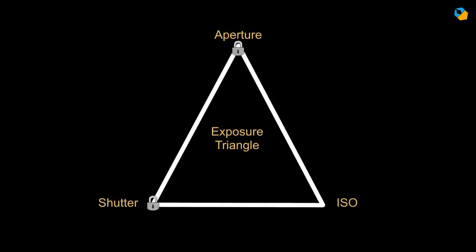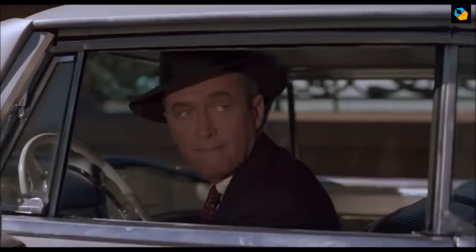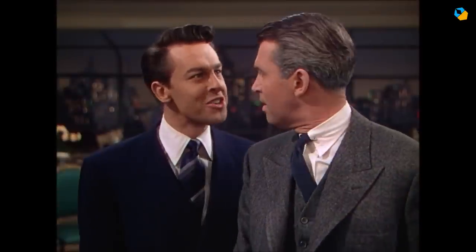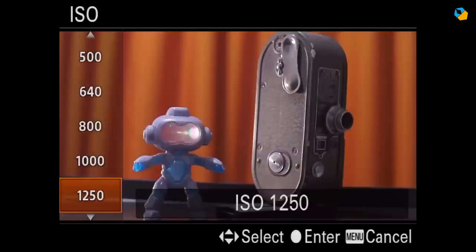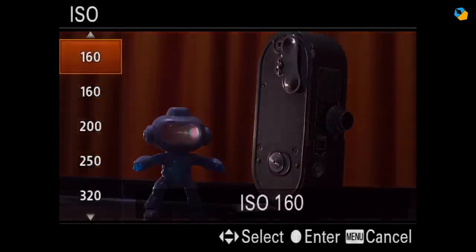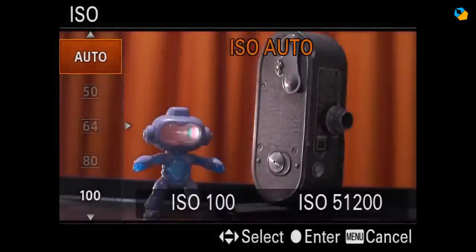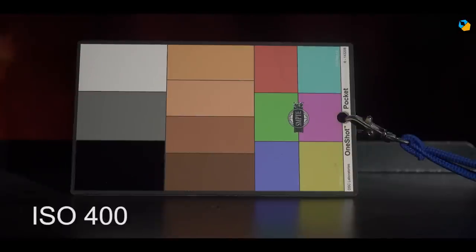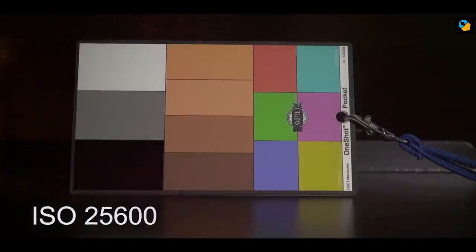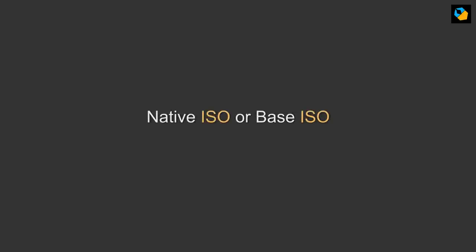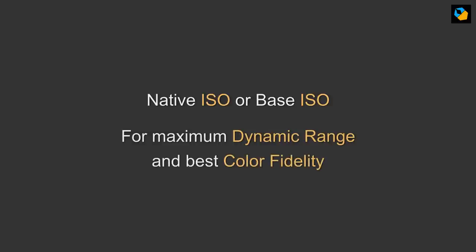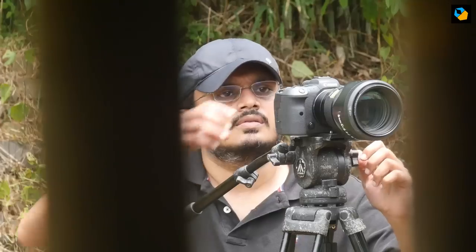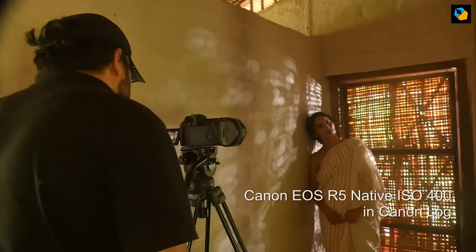Number 3: the ISO. In the exposure triangle, the ISO is the third cog. ISO changes the sensitivity — sometimes it's done in hardware, and sometimes it's purely software based. What cinematographers care about is the effect: when you raise the ISO, you get more noise. Cameras also have a native or base ISO, which is the ISO at which you get the maximum dynamic range and best color fidelity. For example, the Arri Alexa has a native ISO of 800, and the Canon EOS R5 has a native ISO of 400.